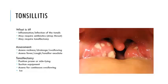Tonsillitis is an inflammation or infection of the tonsils. It may require antibiotics, specifically for strep throat, or a tonsillectomy if it's a recurring issue. For assessment, test to determine if it's strep versus something else, assess redness, drainage, and ability to swallow. As you can see in the image, these tonsils and the uvula are extremely swollen — the airway is nearly cut in half — so we must be very careful that the patient can still breathe.